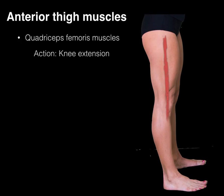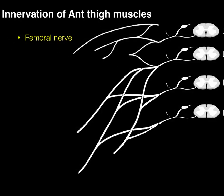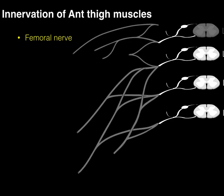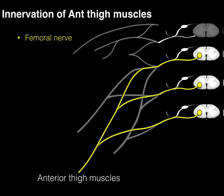Now let's talk about innervation of the anterior thigh muscles — basically all through the femoral nerve. Looking at the spinal cord levels, we focus on L2, L3, and L4. Motor neurons in the ventral horn course out the ventral rami and unite to form the femoral nerve, which innervates all the anterior thigh muscles. Clinically, the key focus is the quadriceps femoris group, where the L4 level is highlighted as the L4 myotome for knee extension.